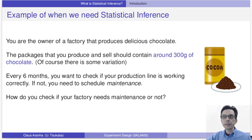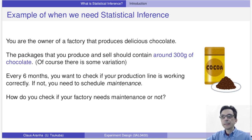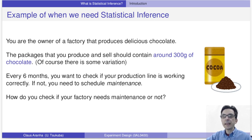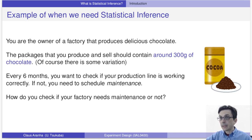Let's start with an example. Imagine I own a factory that produces delicious chocolate. My factory produces packages of cocoa, and each package should contain 300 grams. Of course the factory is not perfect — sometimes a package will have a little bit less, sometimes a little bit more — but as long as the average is 300 grams and the variance is not too big, I'm happy. So every six months I want to check if my production is working right, and if not, I need to execute maintenance to fix any problems.